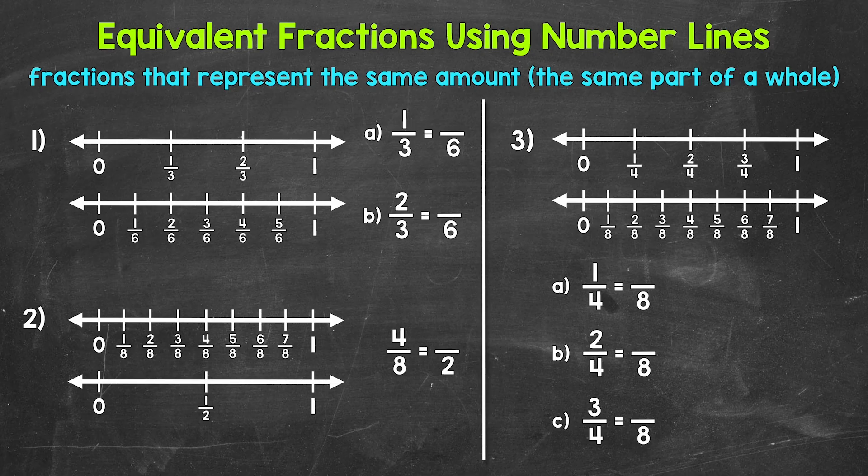Let's jump into number 1, where we have two number lines. The top number line is showing thirds — there are three equal parts between 0 and 1. The bottom number line is showing sixths — there are six equal parts between 0 and 1.